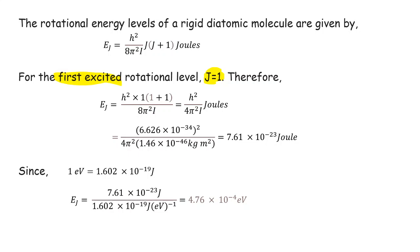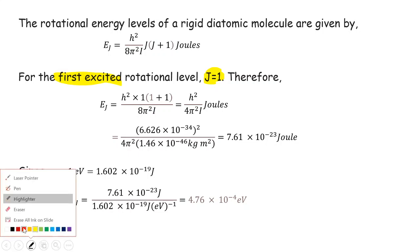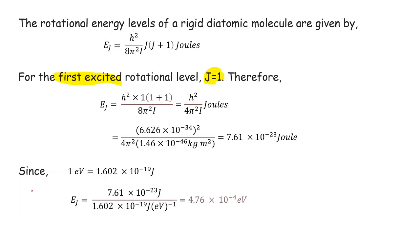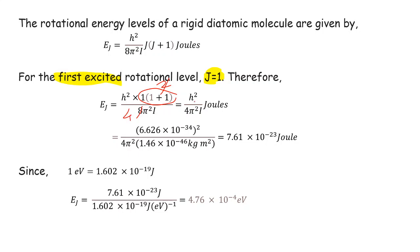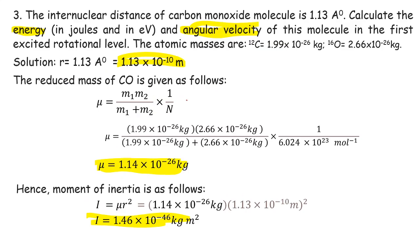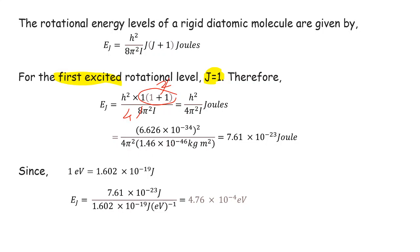E₁ = h² × 1×(1+1) / (8π²I) = h² × 2 / (8π²I) = h² / (4π²I). Substituting h = 6.626×10⁻³⁴ J·s (squared), 4π² = 4×(3.14)², and I = 1.46×10⁻⁴⁶ kg·m², we calculate the energy.